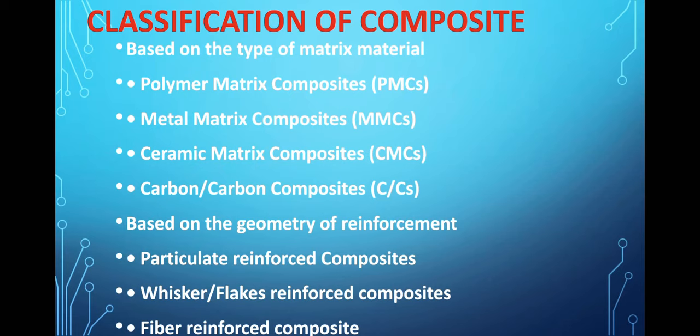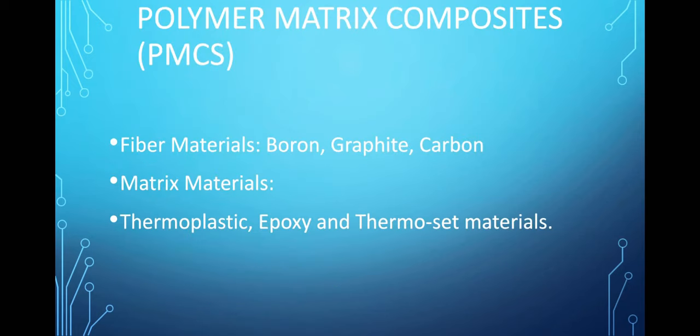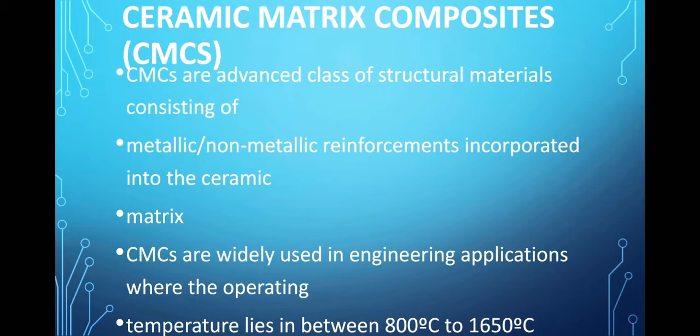Polymer matrix composites use materials like boron, graphite, and carbon. Ceramic matrix composites use metallic or non-metallic reinforcement and ceramic matrix materials, and are used for engineering applications. CMC stands for ceramic matrix composite, and CC stands for carbon and carbon composite.